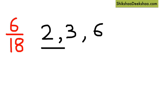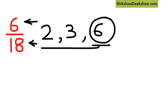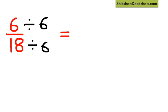Now let's take the biggest number among them and divide both numerator and denominator by this number. So when we divide 6 by 6 we get 1, and when we divide 18 by 6 we get 3.